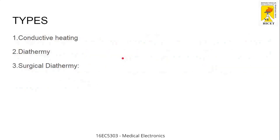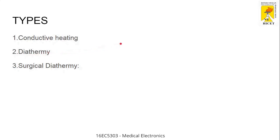The next topic is the types of diathermy. Generally there are different types: conductive heating, diathermy heating, and surgical diathermy. Conductive heating is a normal method of heating. Surgical diathermy is the extension of diathermy — when you perform diathermy during surgery, we name it surgical diathermy.